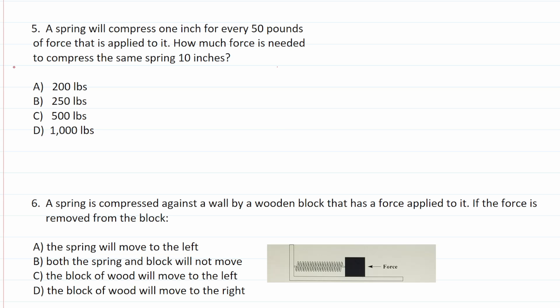Number five says a spring will compress one inch for every 50 pounds of force that is applied to it. How much force is needed to compress the same spring 10 inches? So we're going to use a proportion to solve this one. Again, according to the problem, the spring will compress one inch for every 50 pounds of force that is applied to it. This is going to be equal to the 10 inches of compression that we want over X pounds of force. We're going to be solving for X required to make it compress 10 inches. Again, you solve proportions via cross multiplication. One times X is one X. One X is just X. 50 times 10 is 500. So in other words, it's going to take 500 pounds of force to compress that spring 10 inches, given this ratio here.